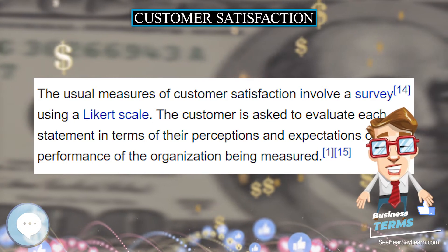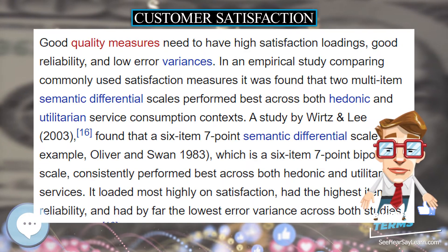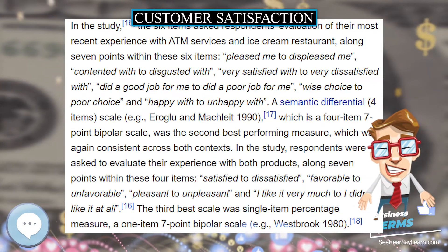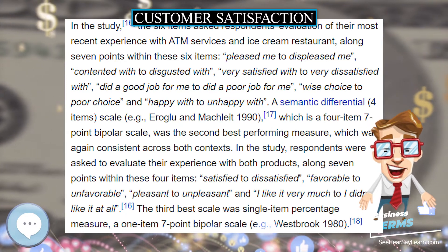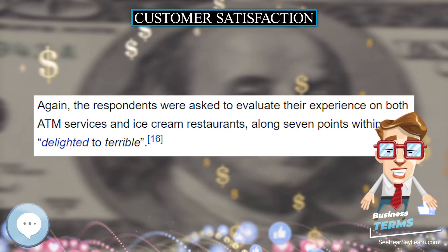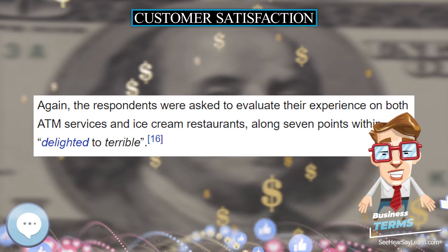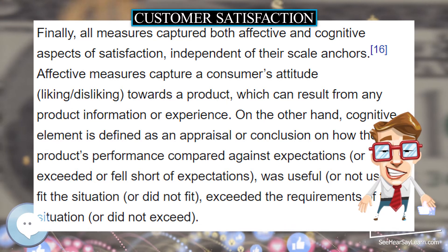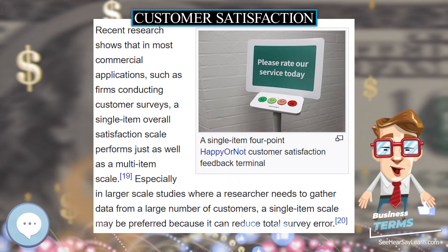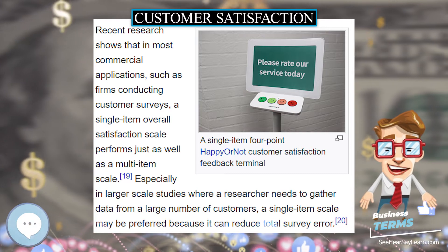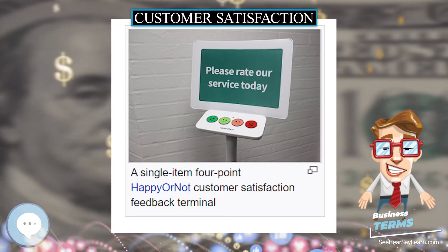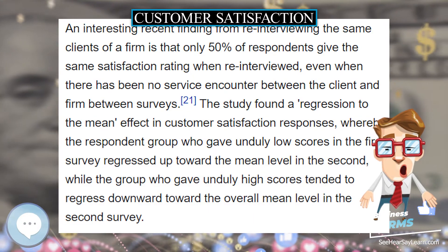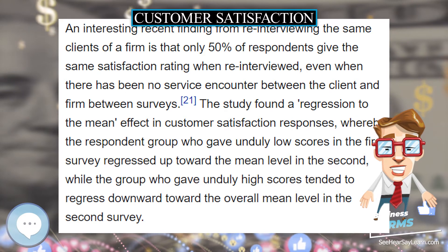Satisfaction is considered as an outcome of purchase and use, resulting from the buyer's comparison of expected rewards and incurred costs in relation to the anticipated consequences. In operation, satisfaction is somehow similar to attitude as it can be evaluated as the sum of satisfactions with some features of a product. In the literature, cognitive and affective models of satisfaction are also developed and considered as alternatives, Pfaff, 1977. Churchill and Surprenant, 1982, evaluated various studies in the literature and formed an overview of the disconfirmation process.